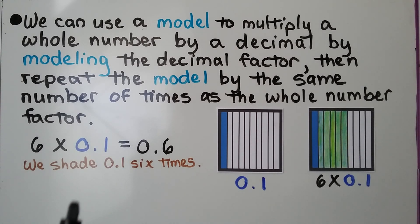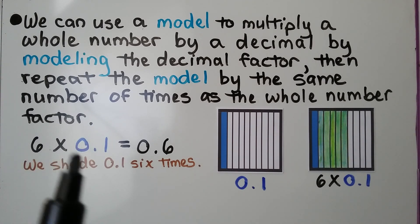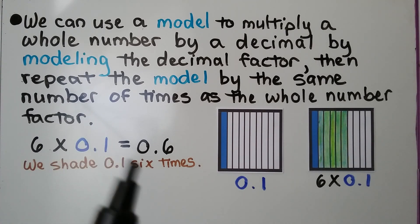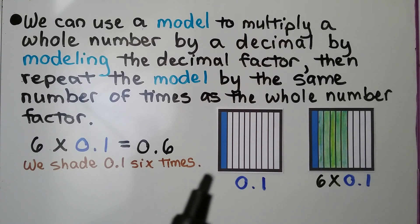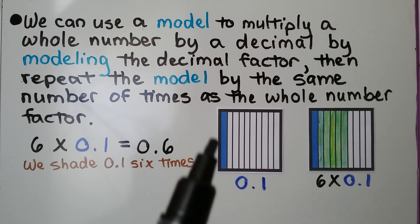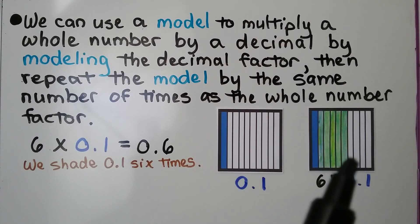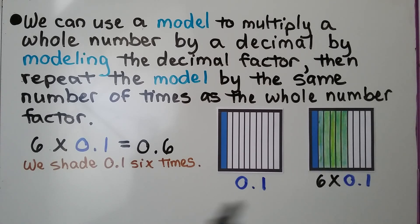So we have six times one-tenth. We shade one-tenth six times. Here's one — we shade it five more times, and we can see it's six-tenths.